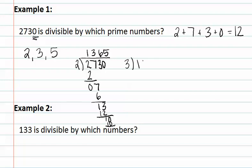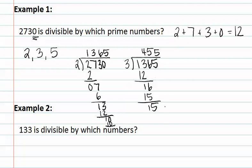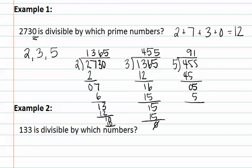Now let's divide 3 into 1,365. 3 goes into 13 four times; 3 goes into 16 five times; and 3 goes into 15 five times, giving us 455. Now we try 5: 5 goes into 455. 5 goes into 45 nine times, and 5 goes into 5 once, giving us 91.